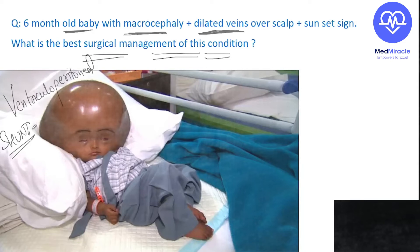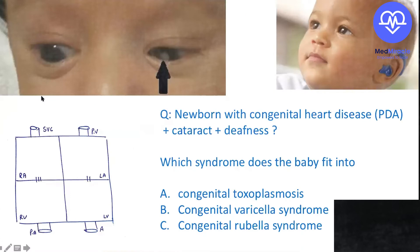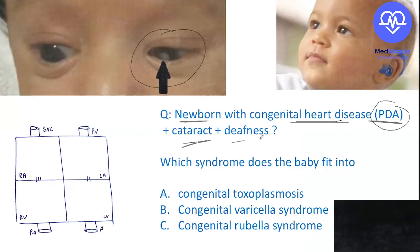The best surgical management of hydrocephalus is the ventriculoperitoneal shunt. Now, the next set of questions: a newborn having congenital heart disease, a cataract, and deafness — which syndrome does the newborn fit into? Congenital toxoplasmosis, congenital varicella syndrome, or congenital rubella syndrome? The answer is congenital rubella syndrome. The mnemonic is CCD — Café Coffee Day: C for congenital heart disease, C for cataract, D for deafness.